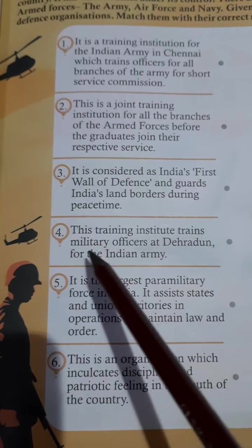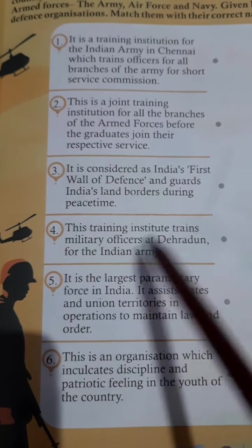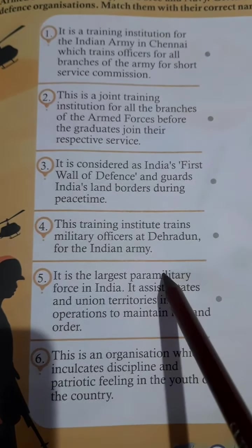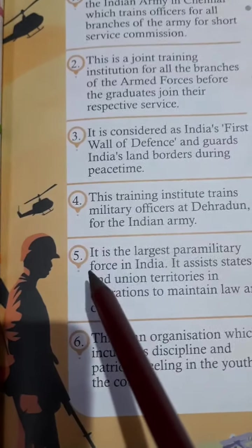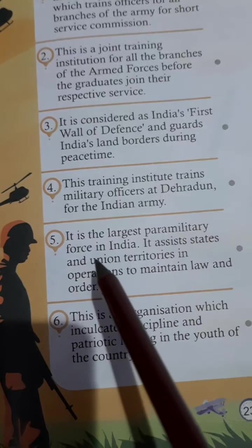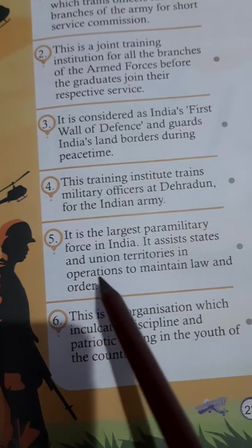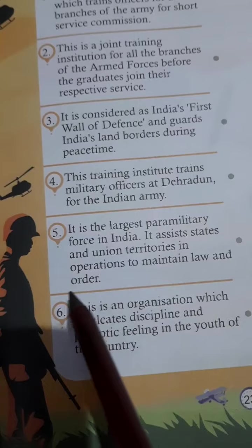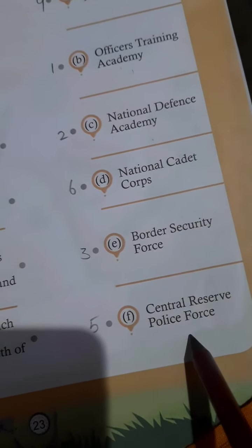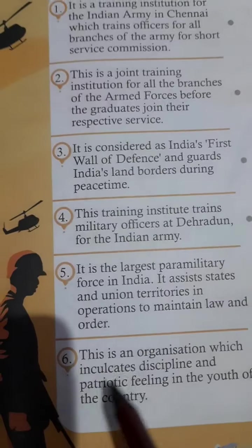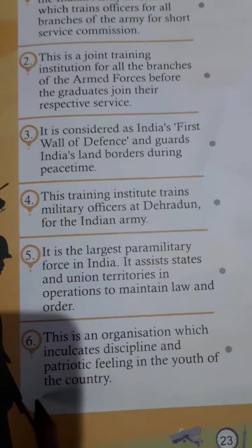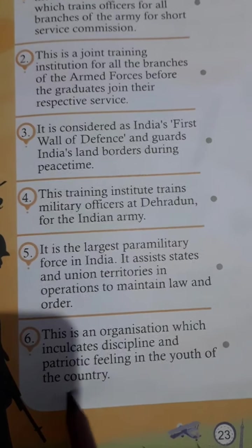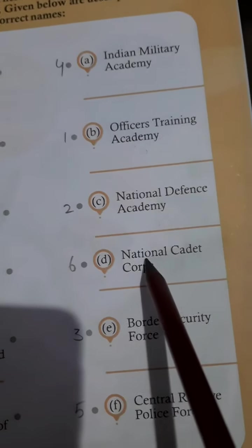Fourth: this training institute trains military officers at Dehradun for the Indian army — this is the Indian Military Academy. Fifth: it is the largest military force in India and assists states and union territories in operations to maintain law and order — that is the Central Reserve Police Force. Sixth: this organization inculcates discipline and patriotic feeling in the youth of the country — this is the National Cadet Corps.